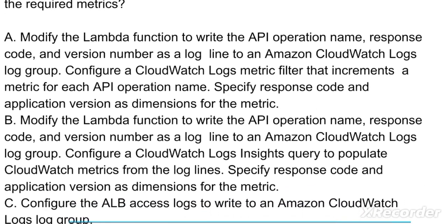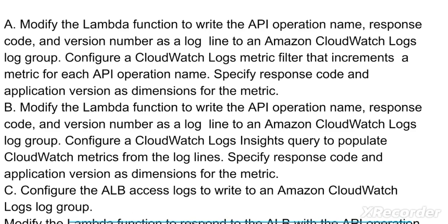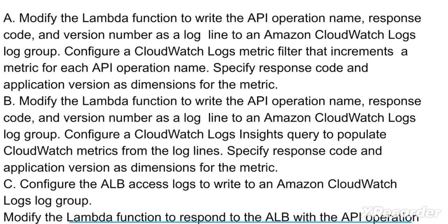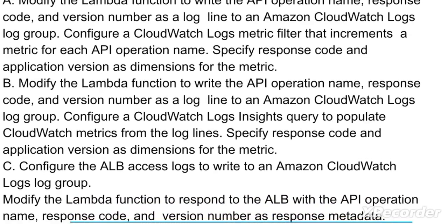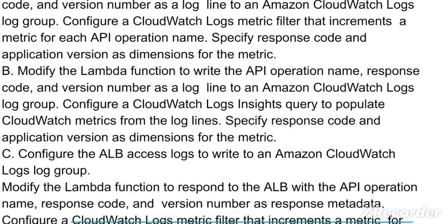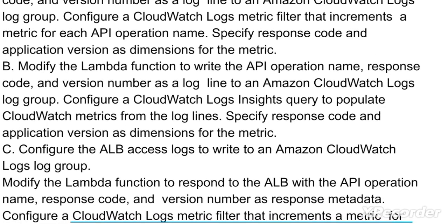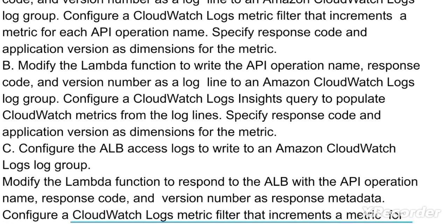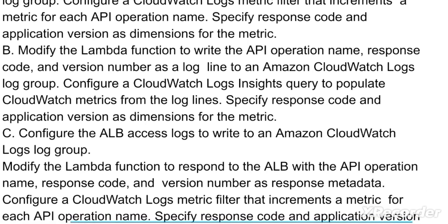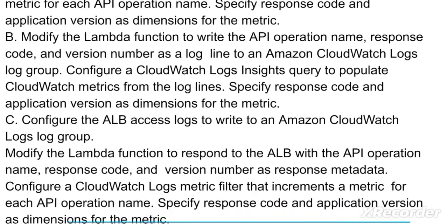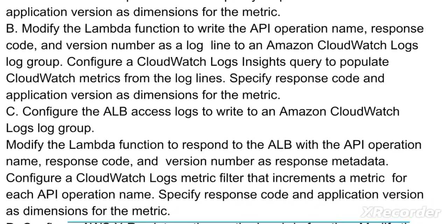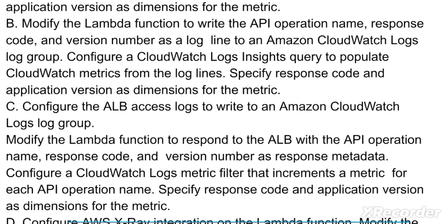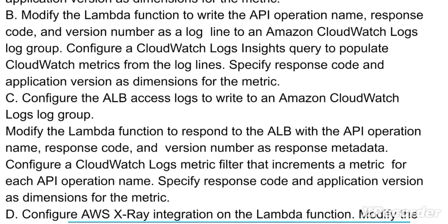Option B: Modify the Lambda function to write the API operation name, response code, and version number as a log line to an Amazon CloudWatch Logs log group. Configure a CloudWatch Logs Insights query to populate CloudWatch metrics from the log lines. Specify response code and application version as dimensions for the metric.